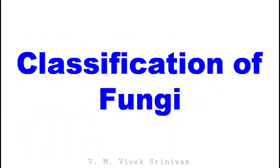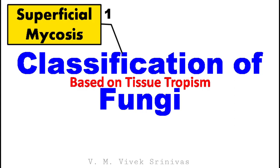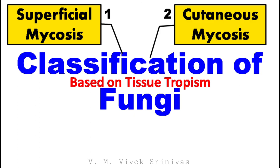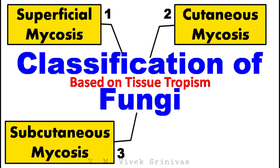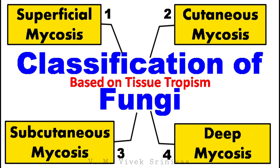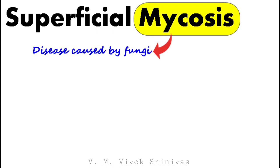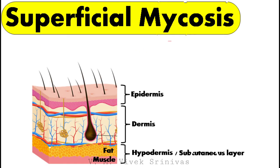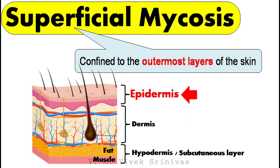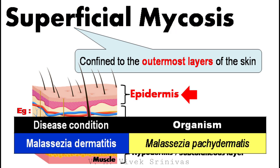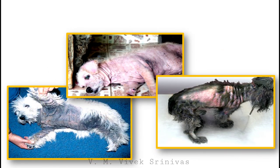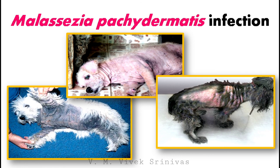Another way of classifying fungi is based on tissue tropism: (1) superficial mycosis, (2) cutaneous mycosis, (3) subcutaneous mycosis, and (4) deep mycosis. Superficial mycosis means the fungal disease confined to the outermost layers of the skin. The disease condition Malassezia dermatitis, caused by Malassezia pachydermatis, is a very good example for superficial mycosis. You might have noticed this type of infection in dogs in the streets. Details about this infection will be discussed in upcoming videos.